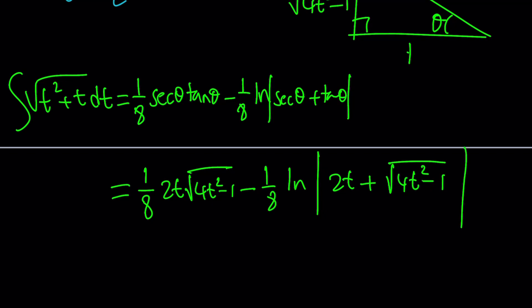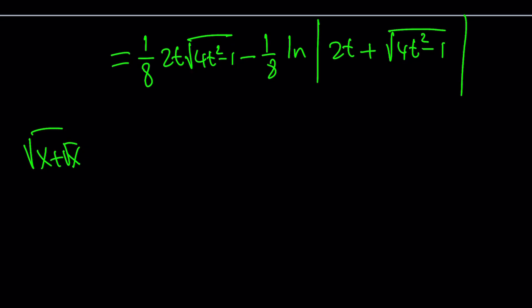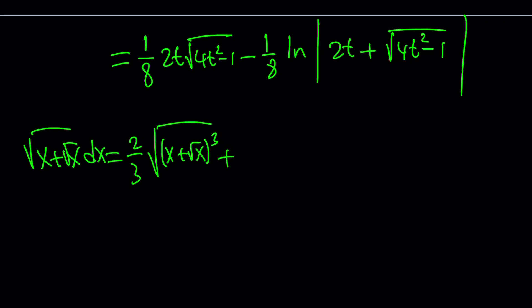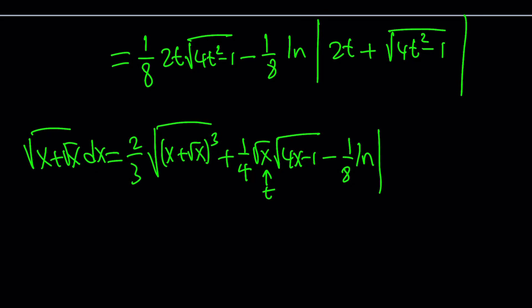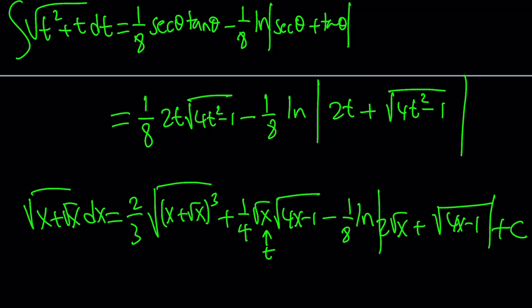Now putting it all together, the integral of the square root of (x + √x) dx is: (2/3)·√(x + √x)³ plus (1/4)·√x·√(4x − 1) minus (1/8)·ln|2√x + √(4x − 1)| + C. That should be the whole thing. I'm going to show you the result from Wolfram Alpha as well so you can compare.